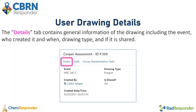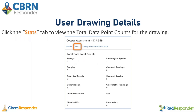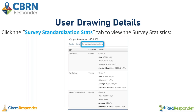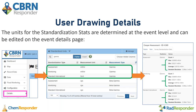The first tab — the details tab — contains general information including the event, who created it and when, the drawing type, and its sharing permissions. The stats tab shows the total data point counts of the drawing — for example, four surveys, four observations, one chemical ID, one radiological spectra, and one data set. The final tab is the survey standardization stats tab, which is based on the units you have created at the event level. If you want to change these, you can go to the event details page and scroll down to see the standardized units table.